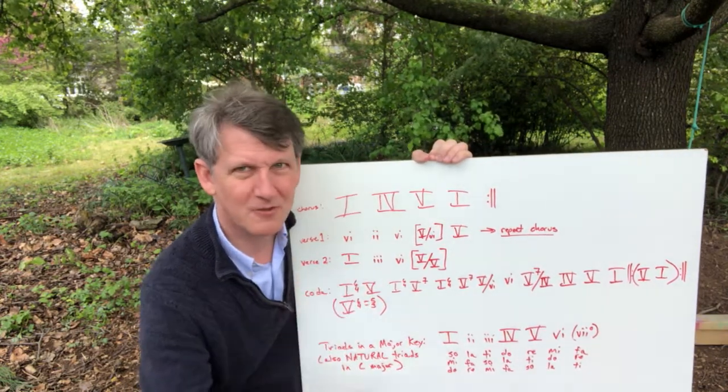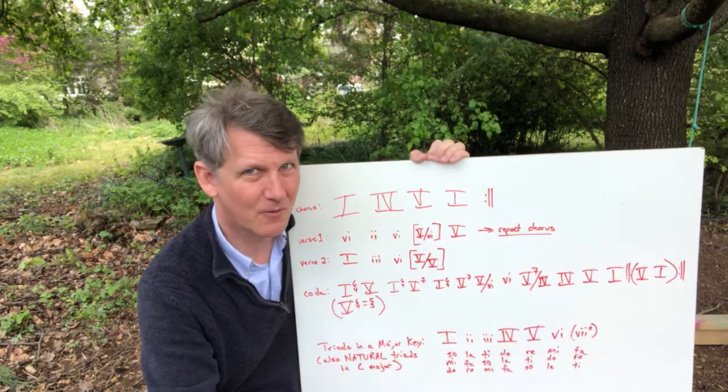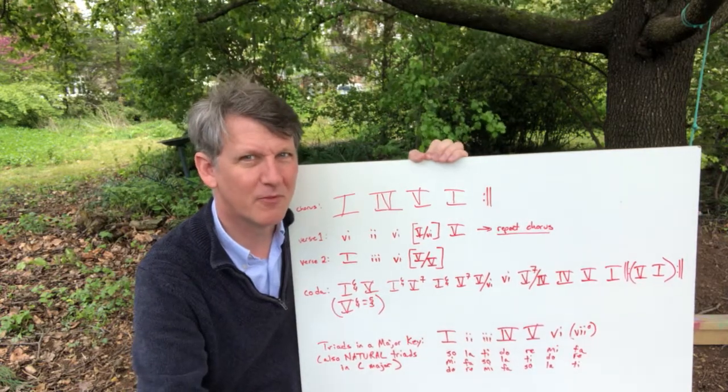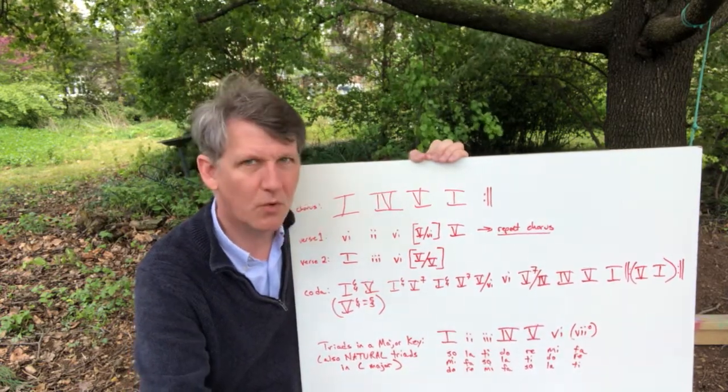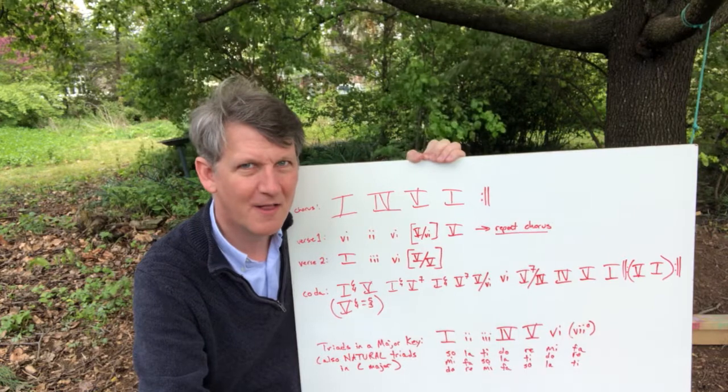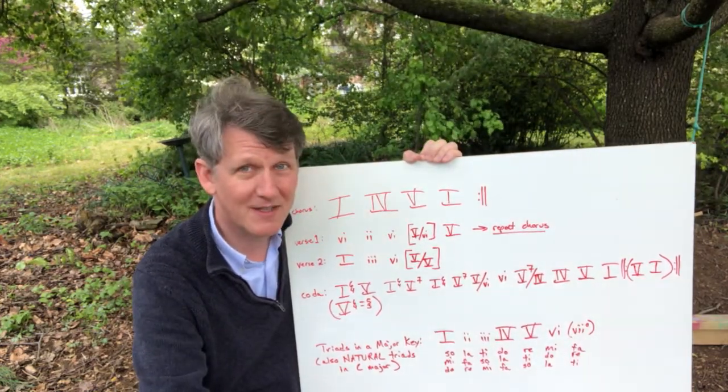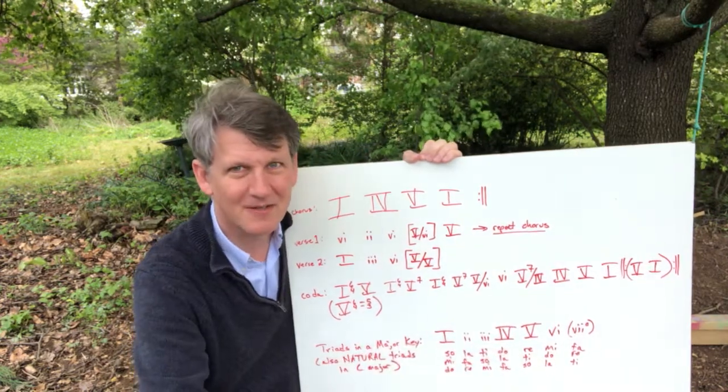It's actually two minor thirds stacked on top of each other, or a minor third from the root and then a diminished fifth up from the root. But it's the only chord in the scale that operates that way. Plus, we'll almost always find it in first inversion, so it's got a parentheses around it.